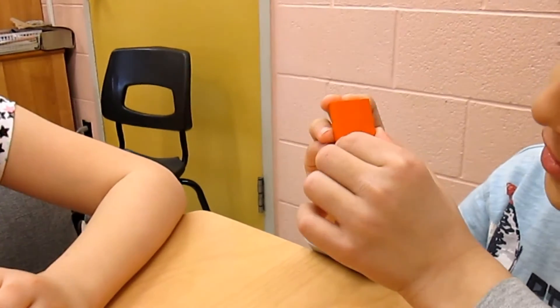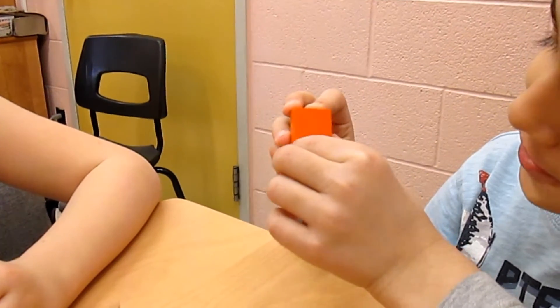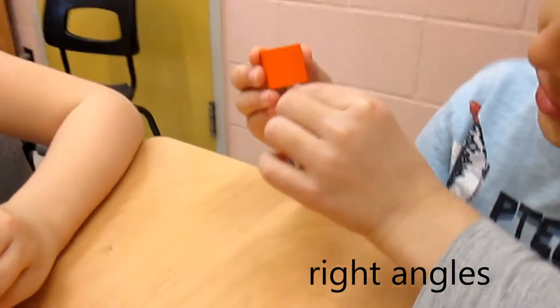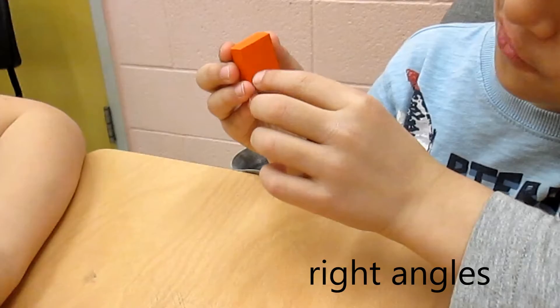This square has a right angle. A right angle is formed with an L shape. A square has four right angles.